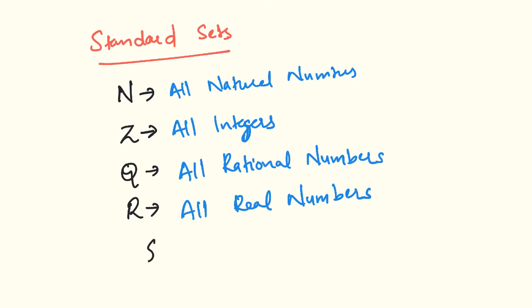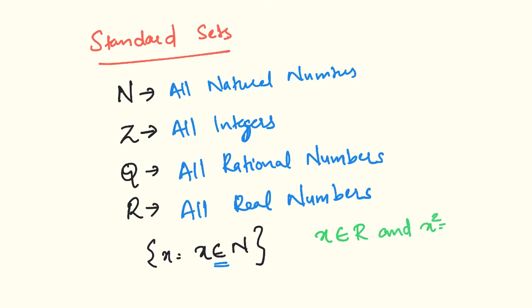Another example: the set of all x such that x is an element of N — where N is the symbol for natural numbers — and x squared equals some value. This uses element-of notation.